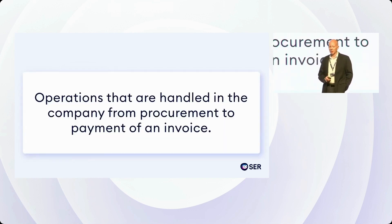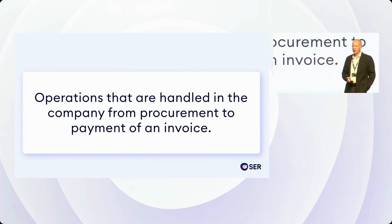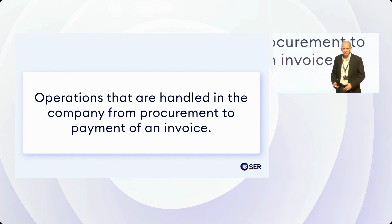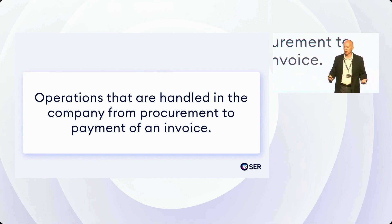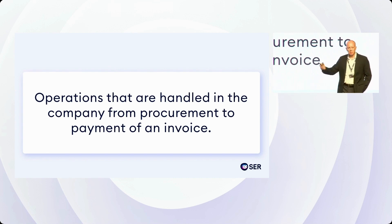But what is purchase to pay in simple terms? Operations are handled in the company from procurement to payment of an invoice. It could be for anything — goods, materials, services, machinery, pizzas, we heard earlier on, apples maybe.